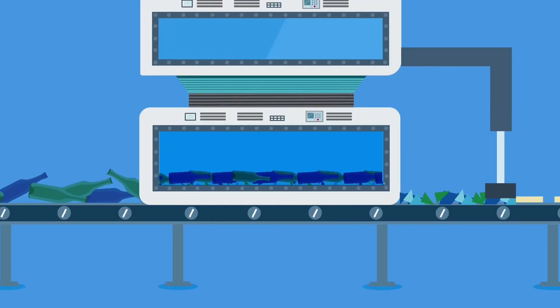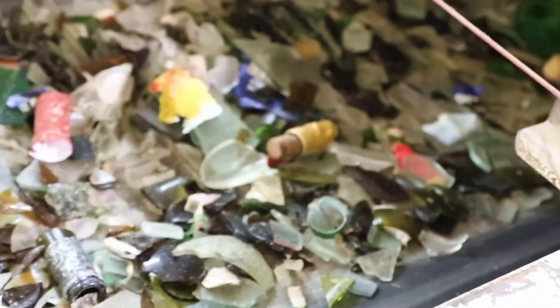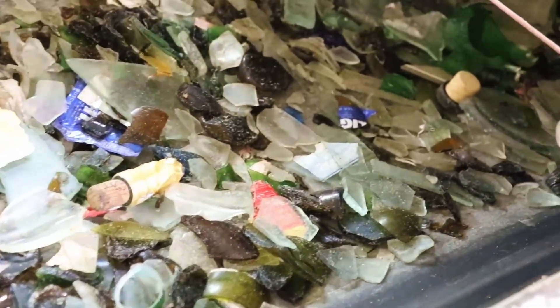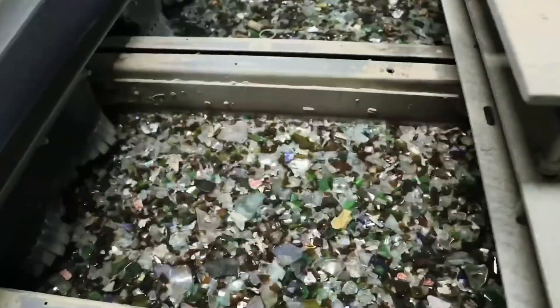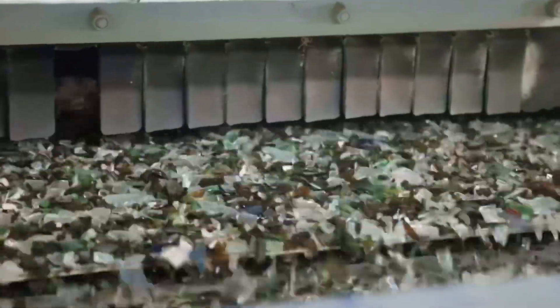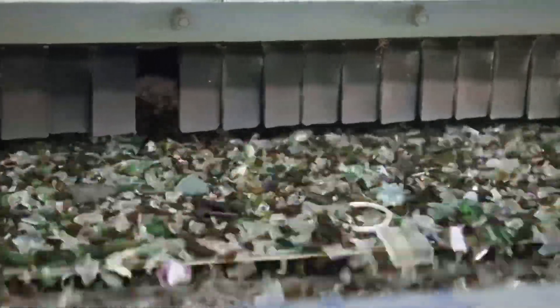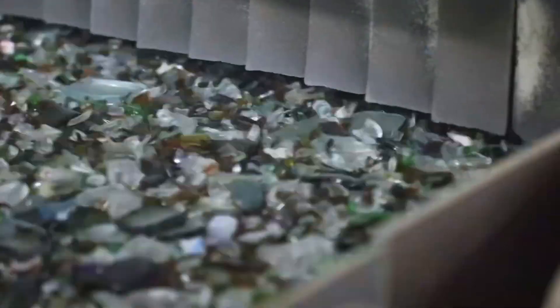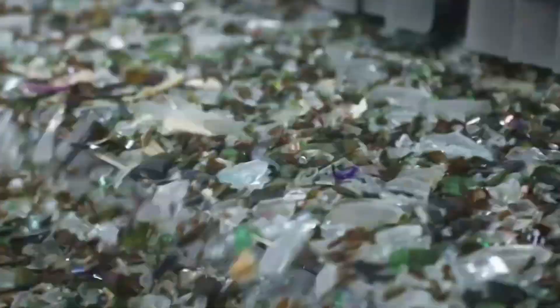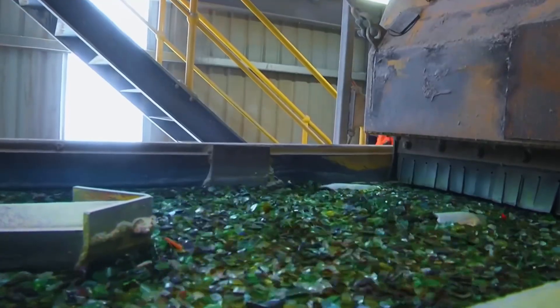At this point, the glass looks like sparkling sand—colorful but perfectly clean. To achieve the right properties, corrective additives such as limestone, dolomite, and soda are added to the cullet. These minerals adjust the viscosity and thermal conductivity of the future foam glass. The mixture is then dried and sent into the furnaces.